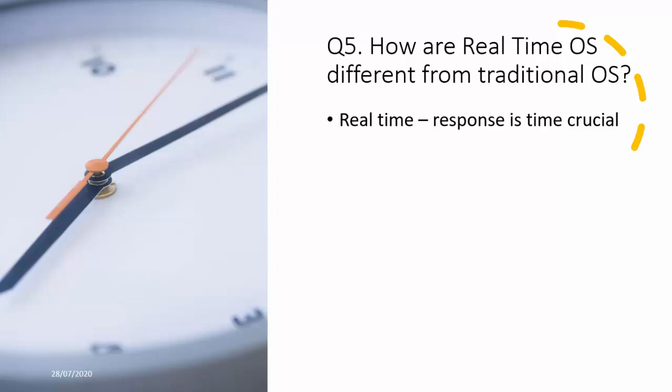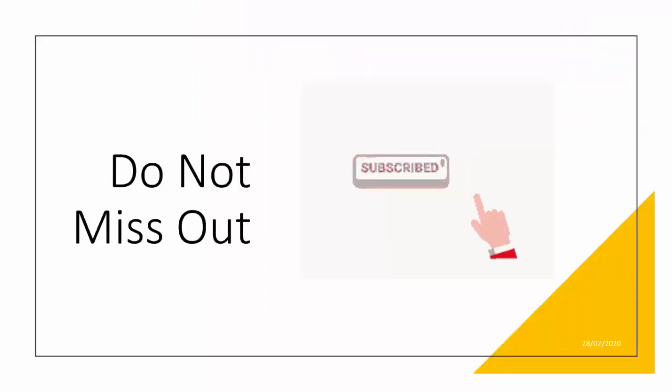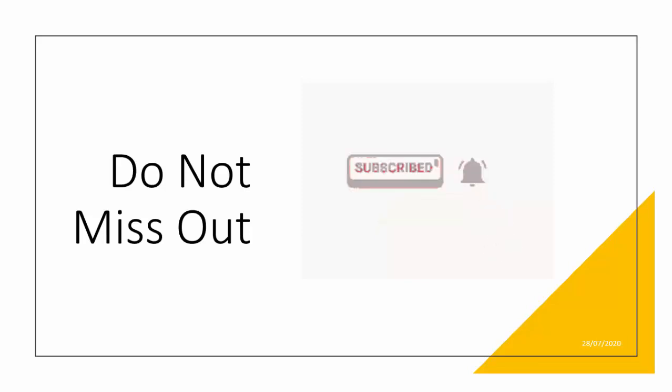Any situation that can lead to disastrous impacts if the system does not respond within a deadline is handled by a real-time OS. How are these different from traditional OS like Windows, Android, or Linux on laptops, desktops, or mobiles? If you start an application like MS Word or Facebook and it doesn't open for one, two, or even five minutes due to high system load, nothing serious happens — only your time is wasted. That was all for this part. Do subscribe to the channel and press the bell icon to get notified when part two is published.